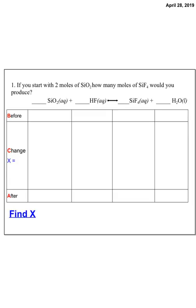Here's our first problem. If you start with 2 moles of SiO2, how many moles of SiF4 would you produce? So step 1, we've got to balance this equation. Don't worry guys, I got this one: 1, 4, 1, 2. Step 2 is we have to look at what's given. And in this case, 2 moles of SiO2 is what's given. And we need to convert it to moles. Well, that's so nice, this one already is in moles, so I'm going to say before we have 2 moles.